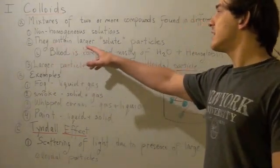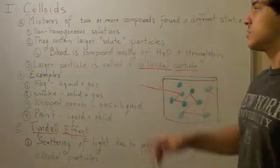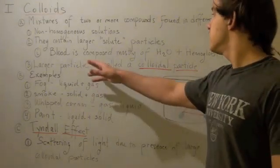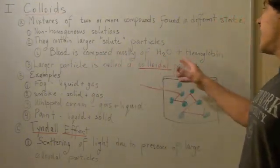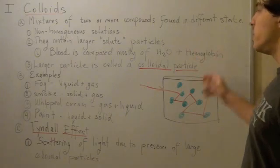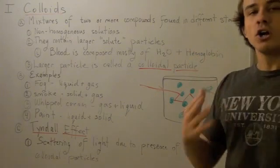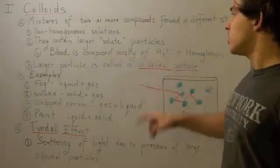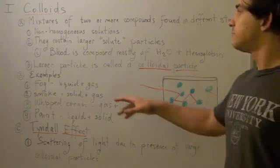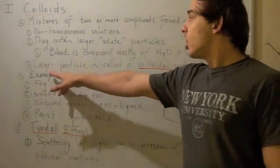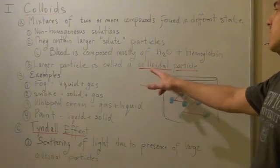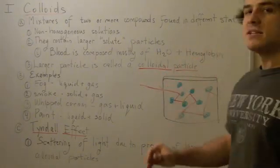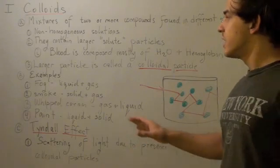Colloids also contain larger solute particles. For example, blood, which is a colloid, is composed mostly of water and hemoglobin. Hemoglobin is the larger particle — the solute — while water is the solvent. These larger particles are also called colloidal particles, so hemoglobin is the colloidal particle.